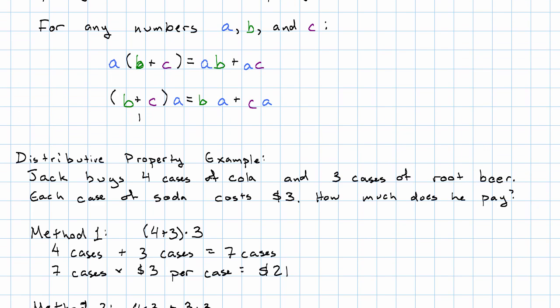Method one is the left side of the distributive property. Method two is the right side of the distributive property. That's what's going on with the distributive property. We think of having two kinds of things that we're grouping together and then multiplying by something. We could instead multiply each kind of thing separately and then add together the results.